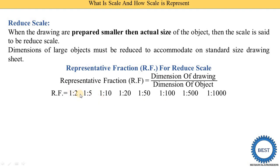Here the example given is 1:2, where 1 indicates the dimension of drawing. The values 2, 5, 10, 20, 50, 100, 500, and 1000 indicate the dimension of the object. The units of both drawing dimension and object dimension must be the same. For example, if the object size is in meters and the drawing size is in mm, that is not a proper representative fraction — all units must match. These are the representative fractions for a reduced scale.